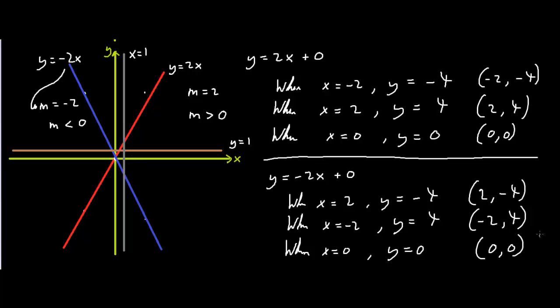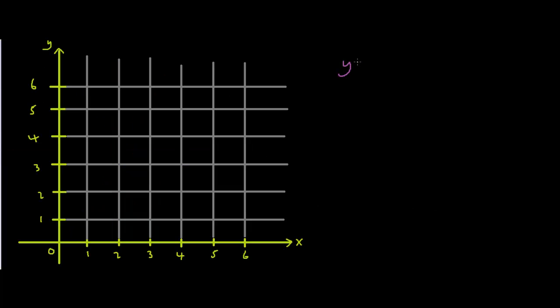So we've spoken about what gradients are — they're slopes. And we've spoken about how lines can have positive slopes and negative slopes or no slopes at all. Now let's find out how to measure slopes. So let's use y equals 2x as an example.